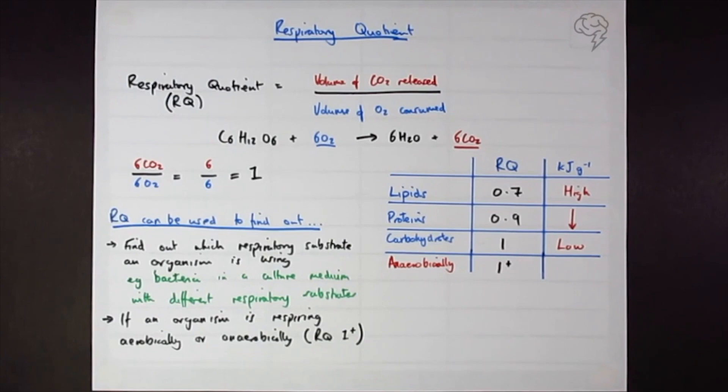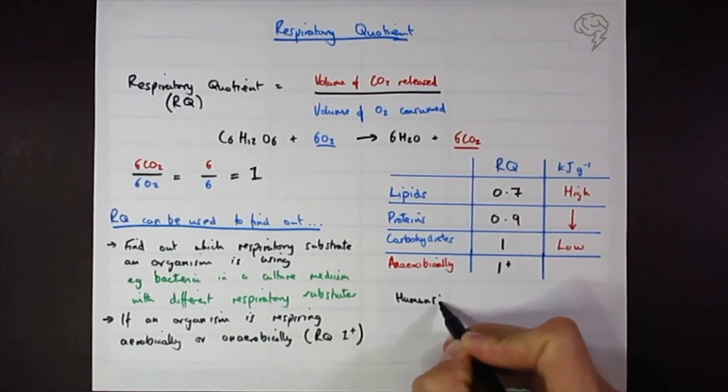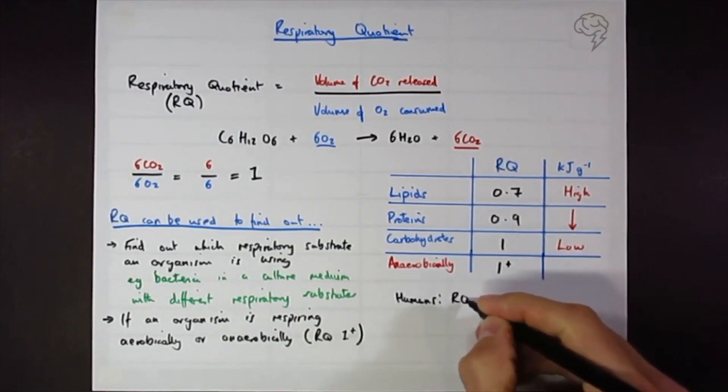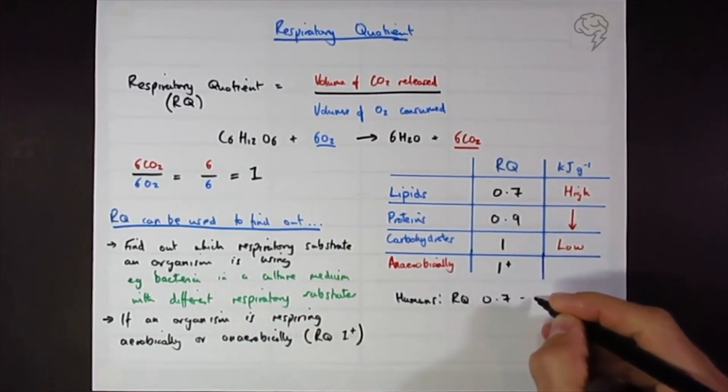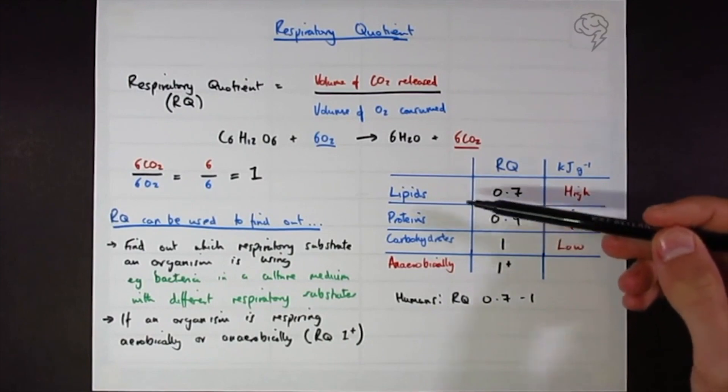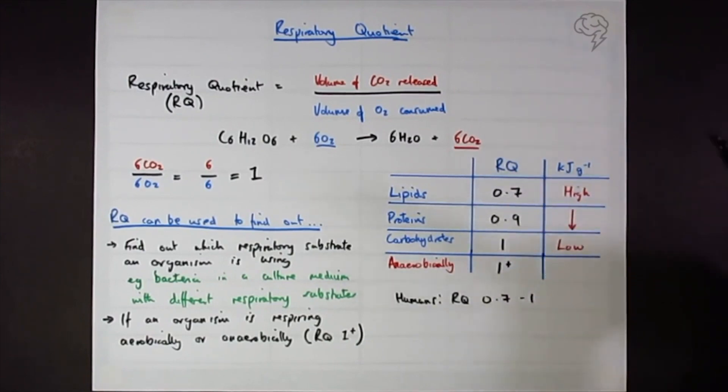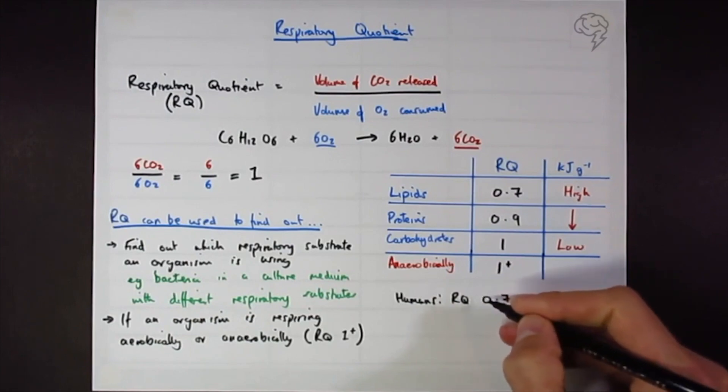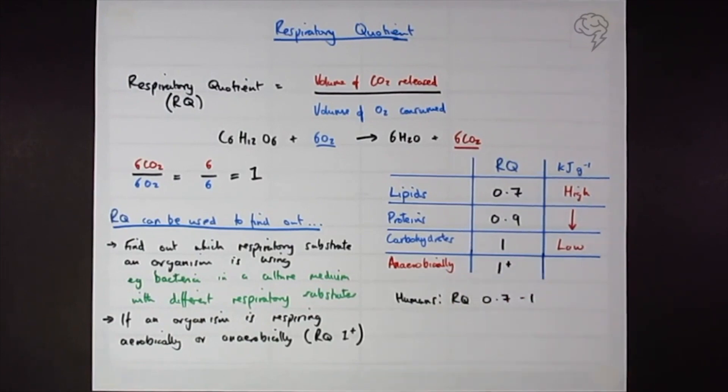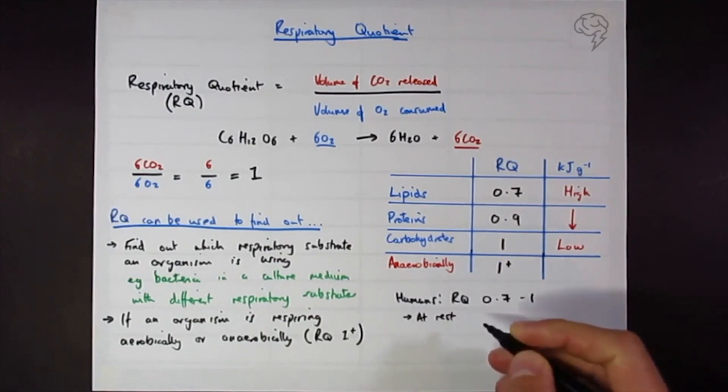We can apply this to humans and look at what their regular RQ usually is. Usually we have an RQ between 0.7 and 1, which tells us that at rest we're respiring a combination of carbohydrates and fats, lipids. We don't use protein as I said unless we absolutely have to. If you're starving on a desert island then you'll start metabolizing proteins, but generally speaking we can't store them and we don't bother respiring them.